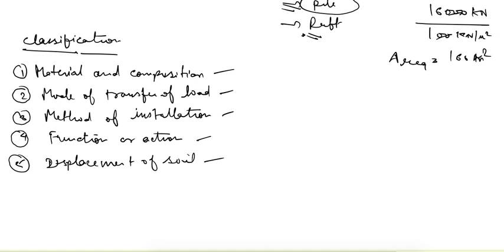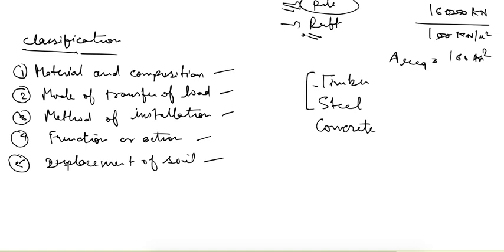First is material and composition. The pile can be made of timber depending upon the load — if the load is not very high, we can go for timber. We can go for steel in case of high loads, or we can go for concrete. Apart from that, if we choose any two of these materials together, then it is called a composite pile.